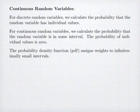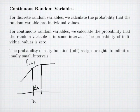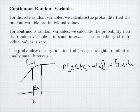The probability density function is what allows us to do these calculations, and it assigns weights to infinitesimally small intervals. Suppose I have a probability density function and I'm interested in a specific value x. The value of the function f(x) is not going to be the probability of x itself, but the probability of a little interval of width dx. The probability that x is in the interval from x to x plus dx is equal to the value of my density function times the width of my infinitesimally small interval.